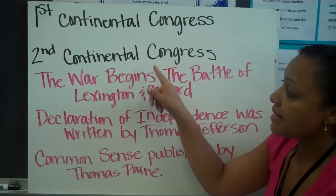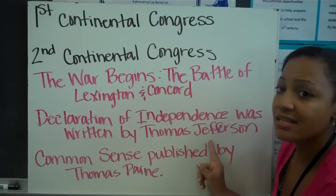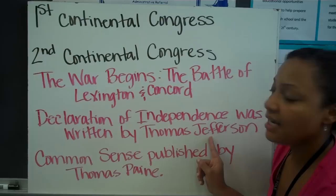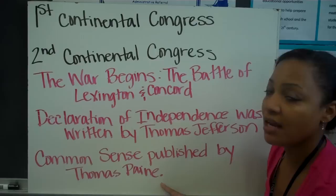So they decided to go to war with England. It's also during this meeting that they discussed the Declaration of Independence. The war began with the Battle of Lexington and Concord. The Declaration of Independence was written by Thomas Jefferson, who was very young at the time — only 33 years old — and he would be the main author of the document.